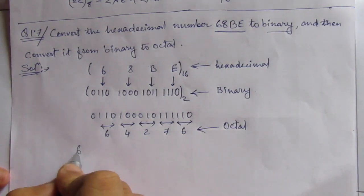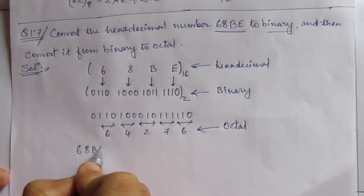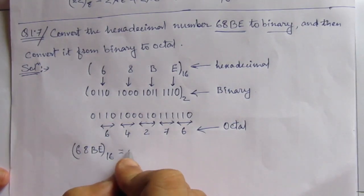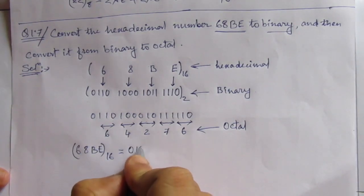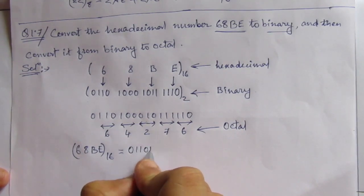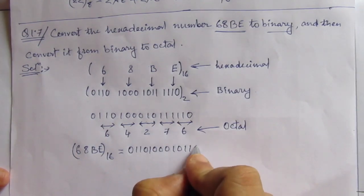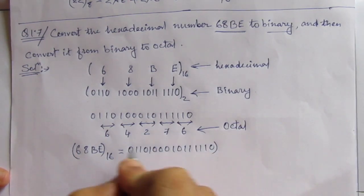So we got that 68BE base 16 equals, in binary equivalent, 0110 1000 1011 1110. This is binary.